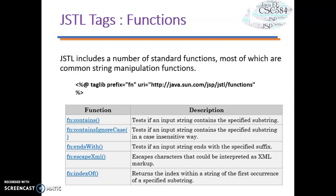Let's look at the last library: functions. JSTL functions are used to manipulate numbers, strings, and more. Here are some examples of JSTL functions supported in JSP — the prefix is FN with the functions URI. Some examples include: fn:contains, fn:containsIgnoreCase, fn:endsWith, fn:escapeXml, and fn:replace.